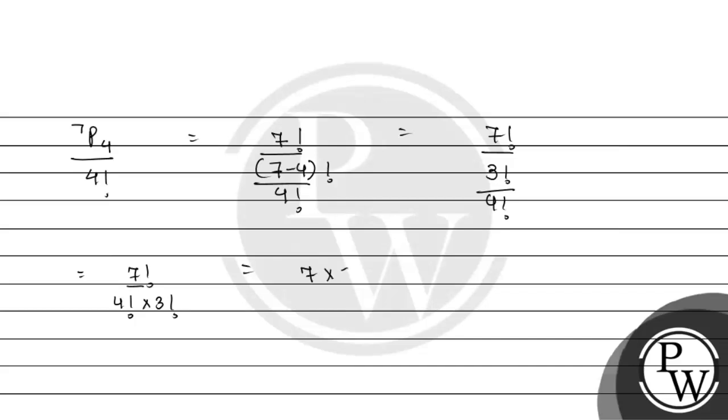This is equal to 7 multiply by 6 multiply by 5 multiply by 4 factorial upon 4 factorial and 3 factorial can be written as 3 multiply by 2 multiply by 1. 4 factorial upon 4 factorial cancel. 3 and 6 cancel. And 7 times 5 is 35.